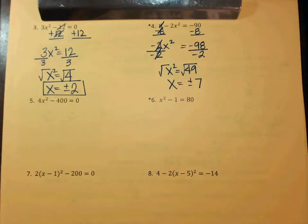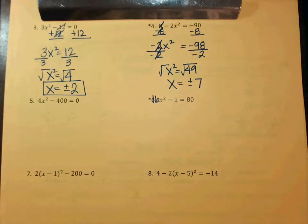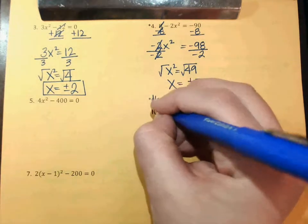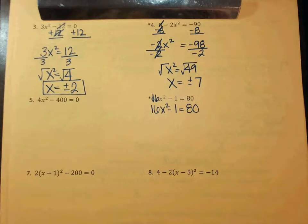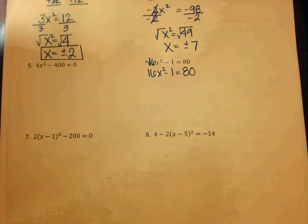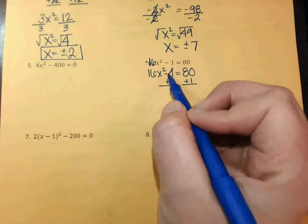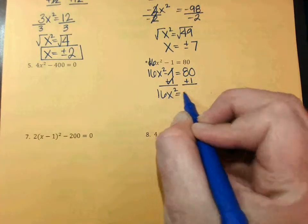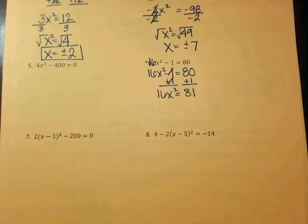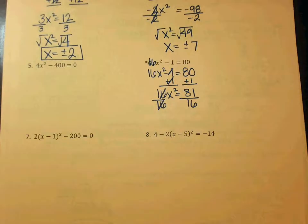The next one we're going to do is number 6, but change it so the problem is 16X squared minus 1 equals 80. First step — what do we do? I would do minus 1 and plus 1 cross out. What is 80 plus 1? So 16X squared equals 81. What would I do next? Divide. Can 81 divide by 16 evenly? No — you will leave it as a fraction.